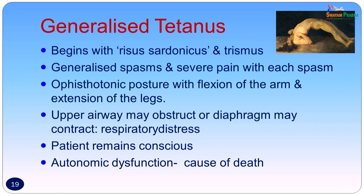Generalized tetanus is usually seen in adults. It begins with risus sardonicus — a sardonic smile due to spasm of the muscles of the face — trismus, difficulty in swallowing, generalized spasms, and severe pain with each spasm. Opisthotonus posture with flexion of the arms and extension of the legs may be seen. The upper airway may obstruct or the diaphragm may contract resulting in respiratory distress. The patient remains conscious till the end, and autonomic dysfunction is usually the cause of death due to respiratory failure.